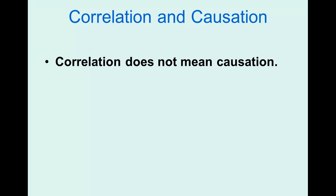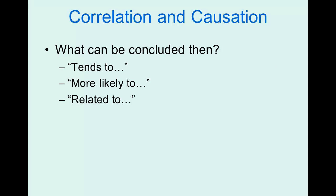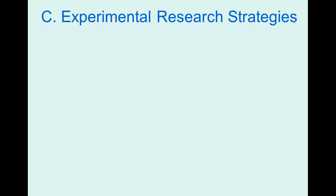One thing you have to be careful about with correlations is that correlation does not mean causation. Thinking about watching violent TV and having aggressive behavior, it's easy to look at a positive 0.3 correlation and think watching TV causes violent behavior. But we can't say causation because it could go the other direction — people who are violent might happen to watch more violent television. We haven't manipulated any variables. So we can say things like watching violent TV is related to violent behavior, but never that one causes the other.